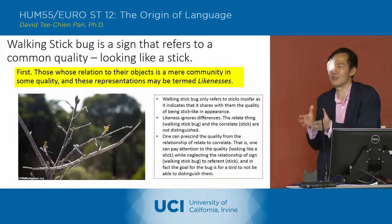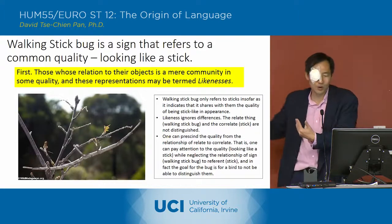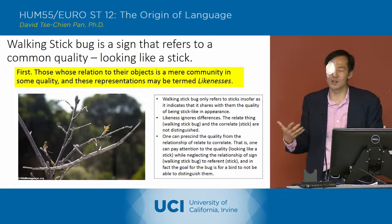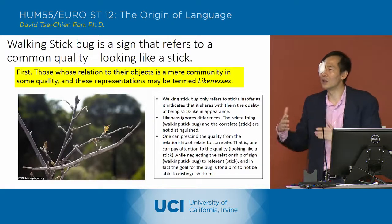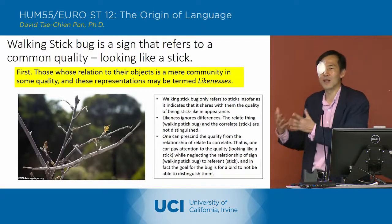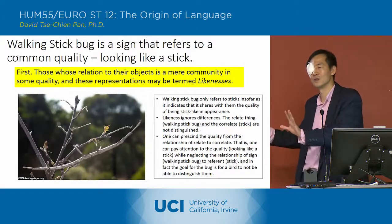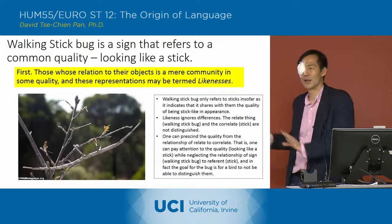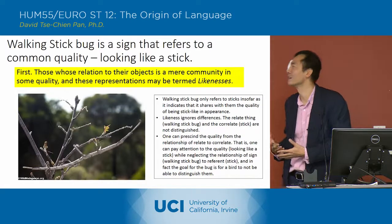You can think of the bug itself as a sign that's referring to the stick, but referring it in a relationship of likeness, in which that relationship of likeness is going to ignore the difference between the relate and the correlate, and just focus on the shared quality.